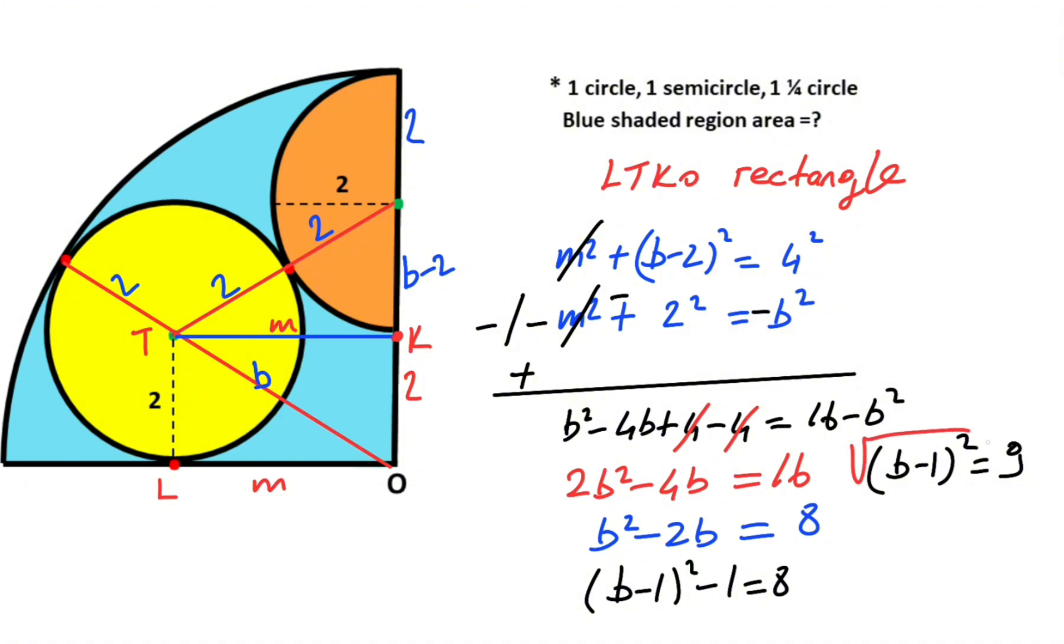Let's take the square root of both sides of the equation. b minus 1 equals 3, so b is going to be 4 units. That means radius of the quarter circle equals 2 plus b, right? So 6 units.